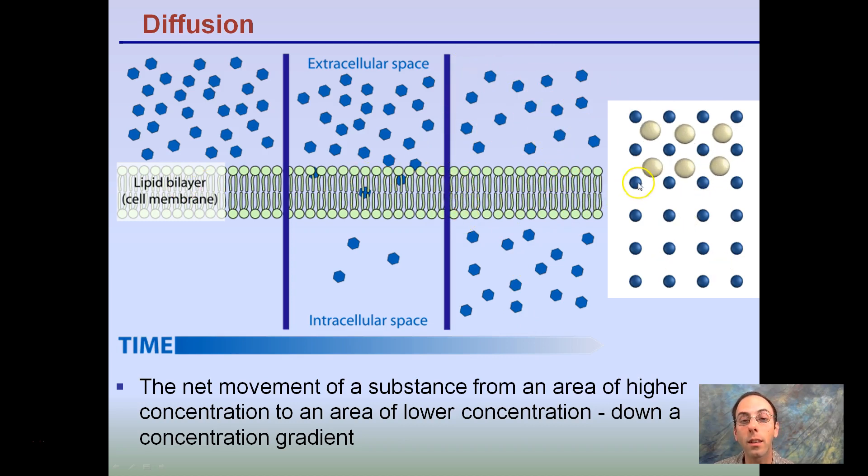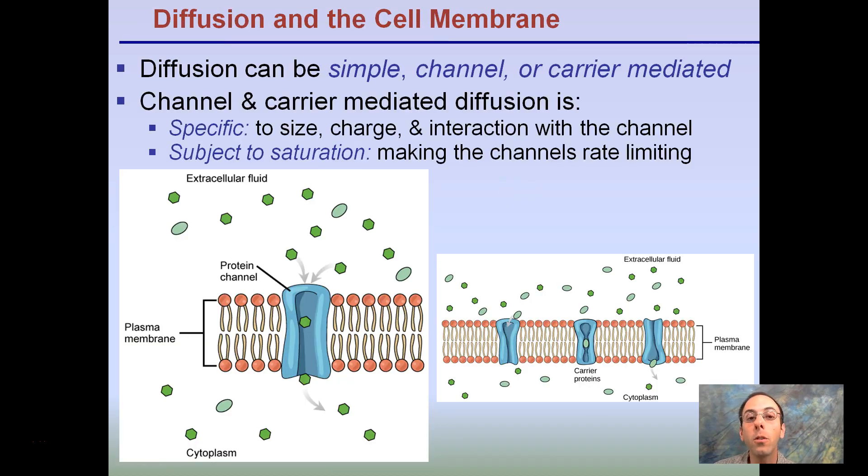The key part here is it's a selectively permeable lipid bilayer. Now this diffusion process can be simple, channeled, or carrier-mediated. The general process is the same. Channel and carrier-mediated diffusion is specific and subject to saturation. So what these two require is this protein channel, for example, or this carrier protein. Simple diffusion just occurs with no energy and it just kind of happens.